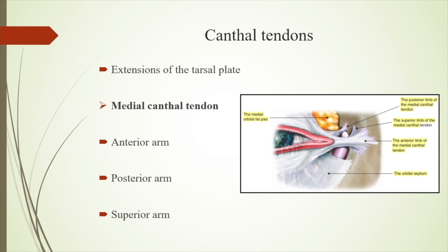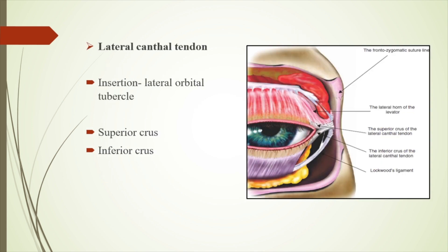The canthal tendons are extensions of the tarsal plate — namely the medial and lateral canthal tendons. The medial canthal tendon is divided into three arms: the anterior arm, posterior arm, and superior arm. Most important is the posterior arm, which provides the angle of the medial canthus. The lateral canthal tendon inserts into the lateral orbital tubercle and divides into two crura: the superior crus and the inferior crus.